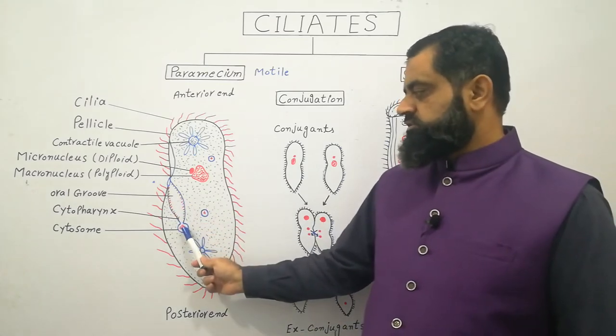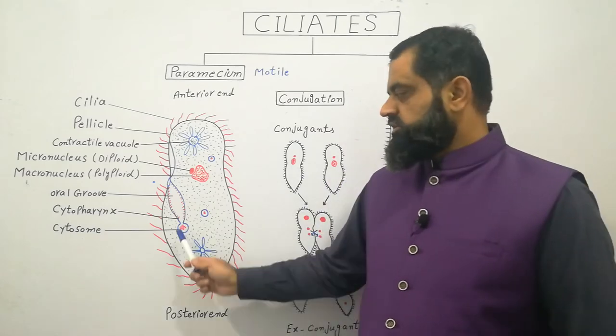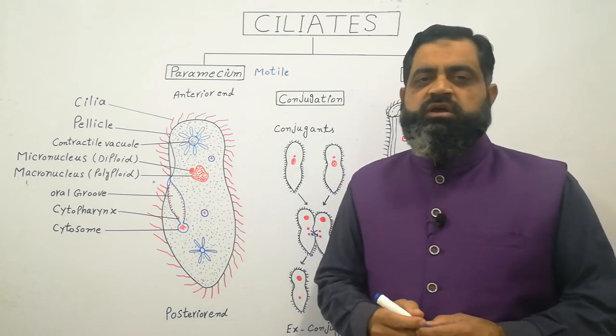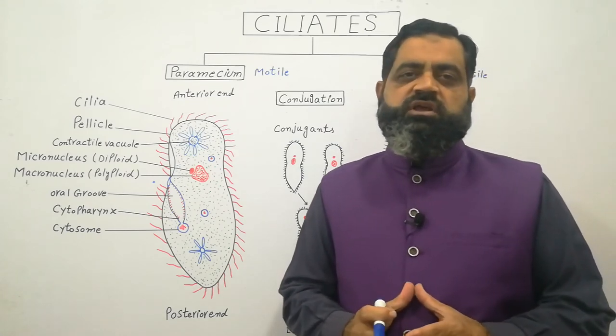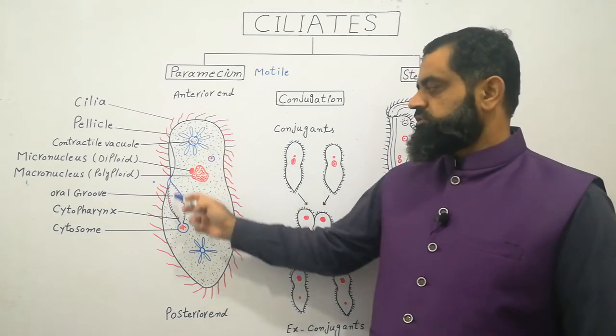Cytopharynx propels the food particle to its terminal end where a cytosome is formed. Cytosome cuts from the cytopharynx and becomes a food vacuole where the food is digested with the help of lysosomal enzymes. And the digested food is distributed towards all over the body.